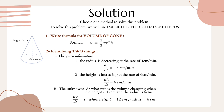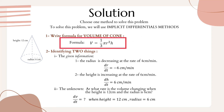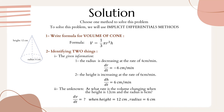The first step is we need to know and write the formula for the volume of a cone. The formula is V = (1/3)πr²h.